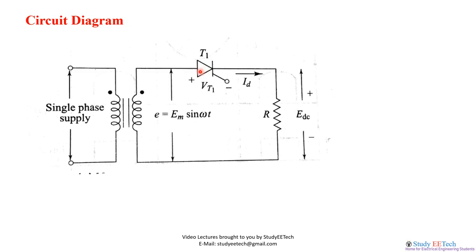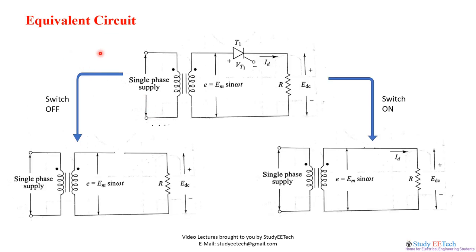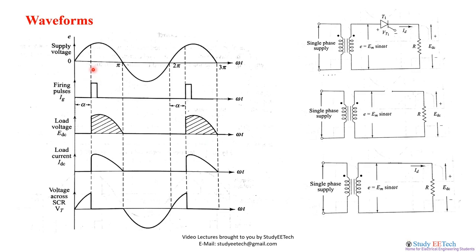The equivalent circuit can be either switch-on or switch-off. If the switch is on, this path will be closed; if the switch is off, the path is open. What does this mean? If the switch is on, the current Id will be present; if the switch is off, Id will be zero. The voltage appearing across the load Edc will be zero when the switch is open, and Edc will equal the input voltage when the switch is closed.